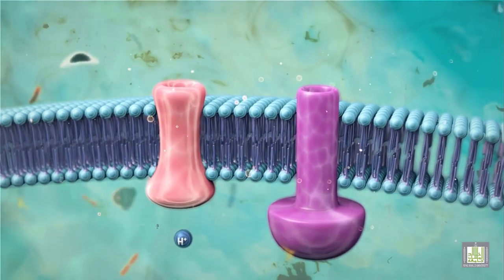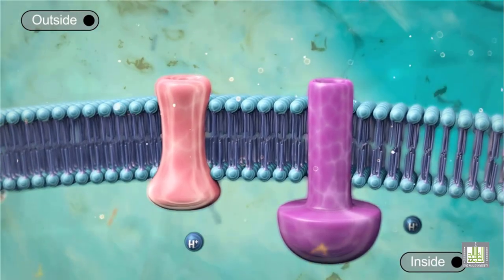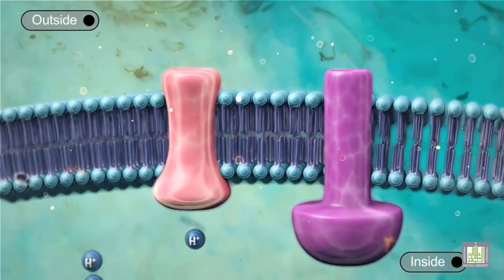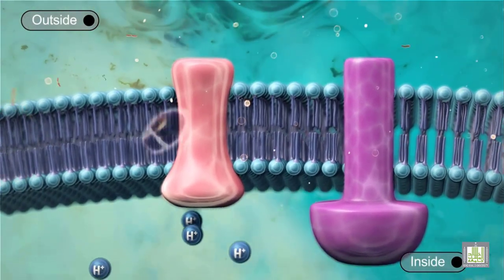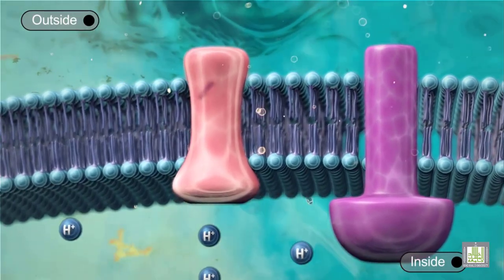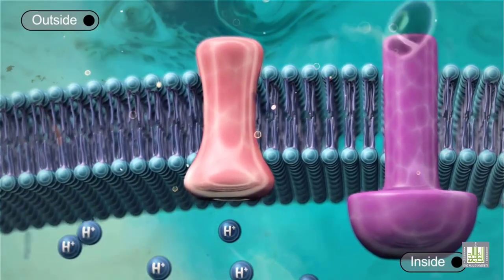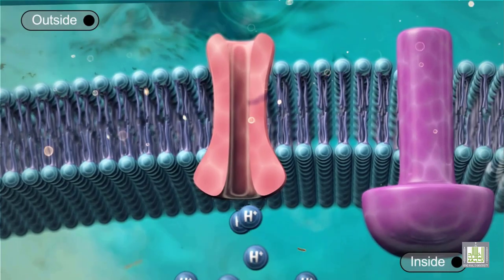Proton pumps are protein complexes that move the protons generated during oxidation reactions across the cell membrane. As the protons move through the proton pump, they begin to build up on the outside of the membrane.